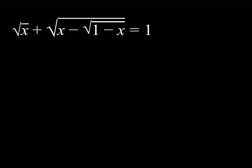I'll be presenting two methods here — first, the cooler one. We're going to check the domain of this function. So for example, here we have square root of x, which means x needs to be greater than or equal to 0. And this implies that x needs to be less than or equal to 1.